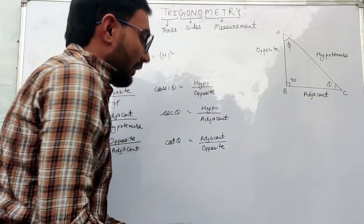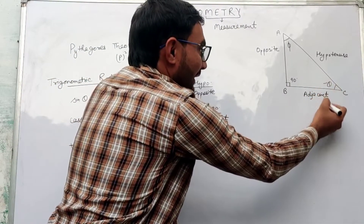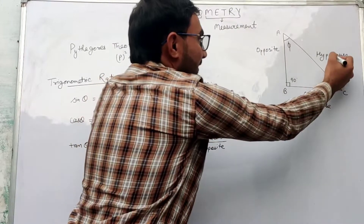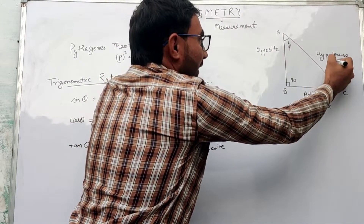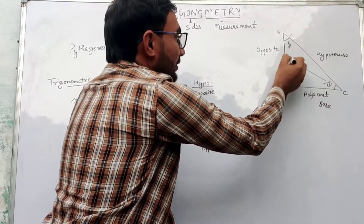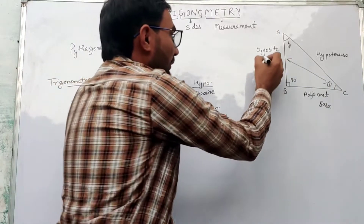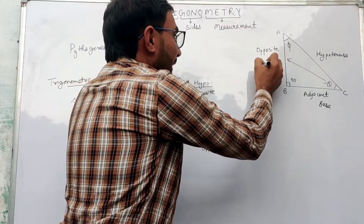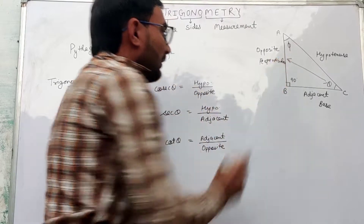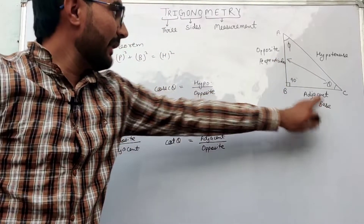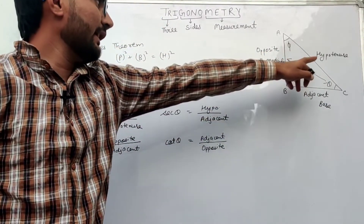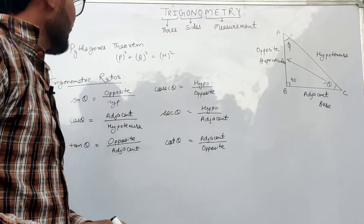So if theta is our angle, this will be our base and this will be our hypotenuse. The opposite side to theta will always be the perpendicular. So we have: this as base, this as perpendicular, and the side opposite to the 90 degree angle as hypotenuse.